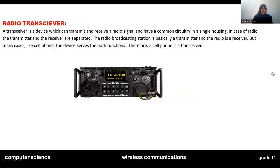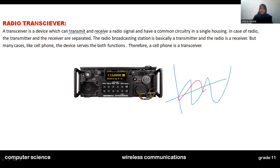Now, what is a radio transceiver? A transceiver is a device which can both transmit and receive. In the case of radio, it deals with electromagnetic waves. It transmits and receives, and has common circuitry in a single housing — meaning one circuit is built into one casing. In the case of radio, the transmitter and receiver are separate.